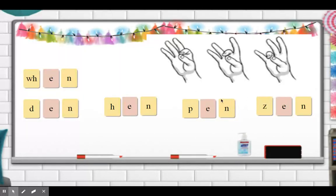Good job. Let's read and tap this word: P, E, N — pen. One more time: P, E, N — pen. Great. Now this last word, ready? Z, E, N — zen. One more time: Z, E, N — zen. What do you notice about all of the words that we just tapped out?